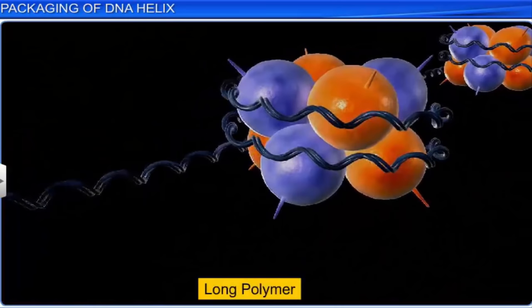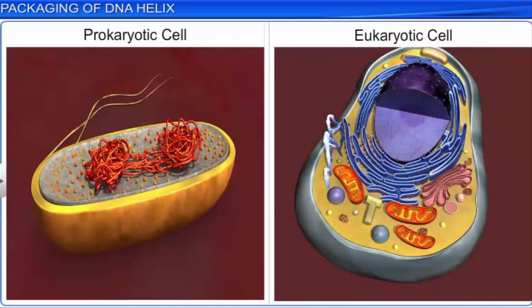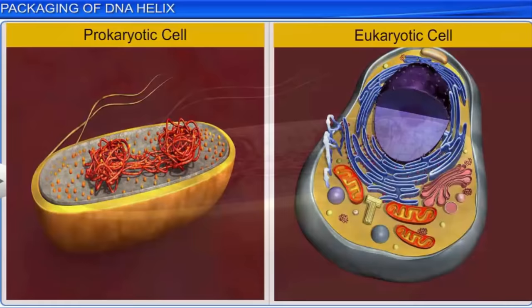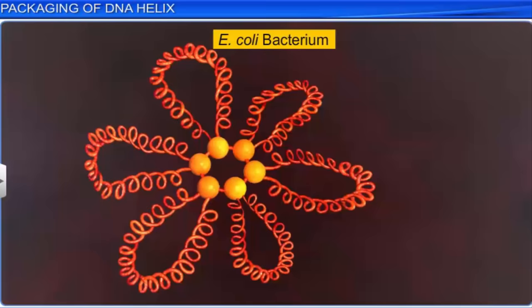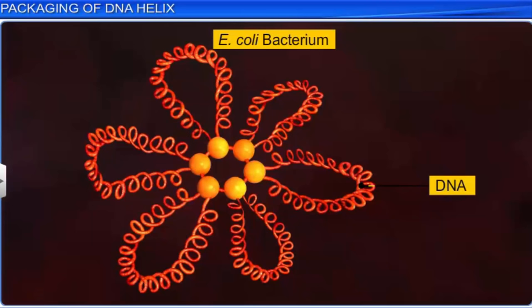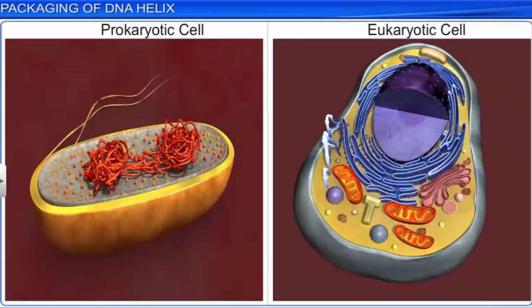Have you wondered how such a long polymer is packaged within a typical nucleus with a dimension of about 10⁻⁶ meters? To understand this, let us learn about the packaging of a DNA double helix, which is different for prokaryotes and eukaryotes. In prokaryotes such as E. coli, the nucleus is not very well defined. However, the negatively charged DNA is not scattered throughout the cell, but is arranged in large loops held together by a few positively charged proteins in a region known as the nucleoid.